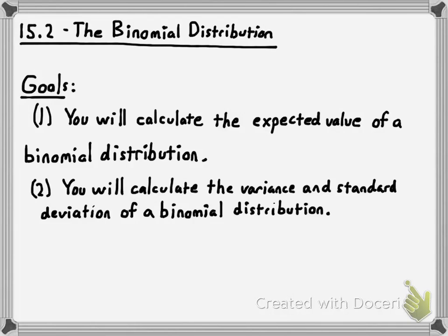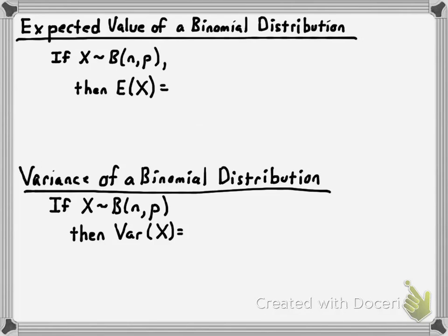There are some formulas we need to talk about first, and these are among the easiest formulas you're going to see anywhere. If we have a random variable X that is binomially distributed with a number of trials n and a probability of success p, the way you calculate the expected value — which is also the mean value — is pretty straightforward.